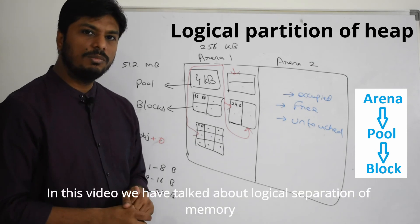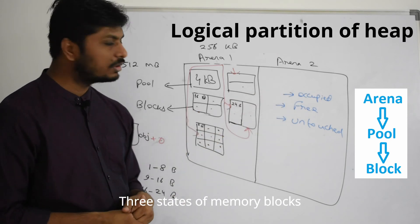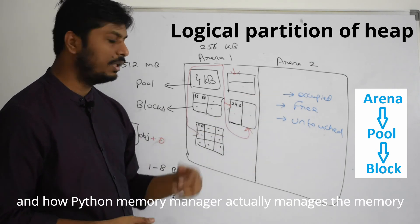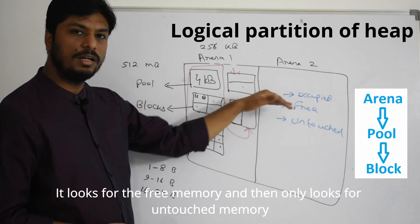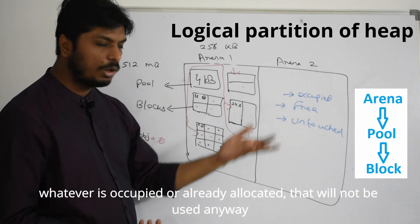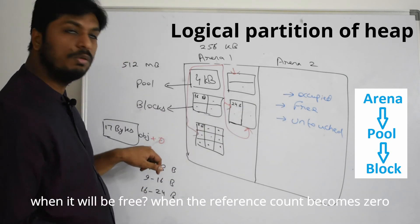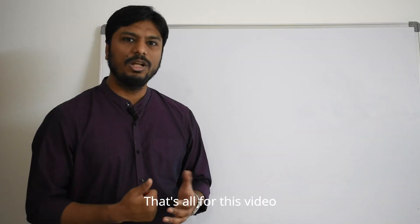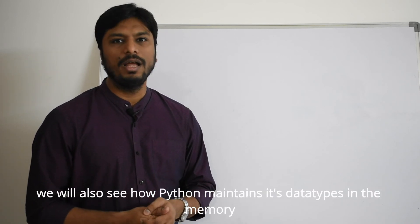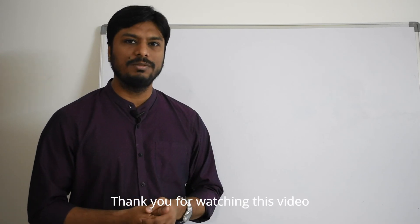In this video we talked about the logical separation of memory, what are the three states of memory blocks, what is the size of each memory block and how Python memory manager actually manages the memory. It looks for the free memory and then only looks for the untouched memory. And whatever is occupied will not be used anyway. In the next video we will be talking more about memory cells at a deeper level and how Python maintains its data types in the memory. Thank you for watching this video.